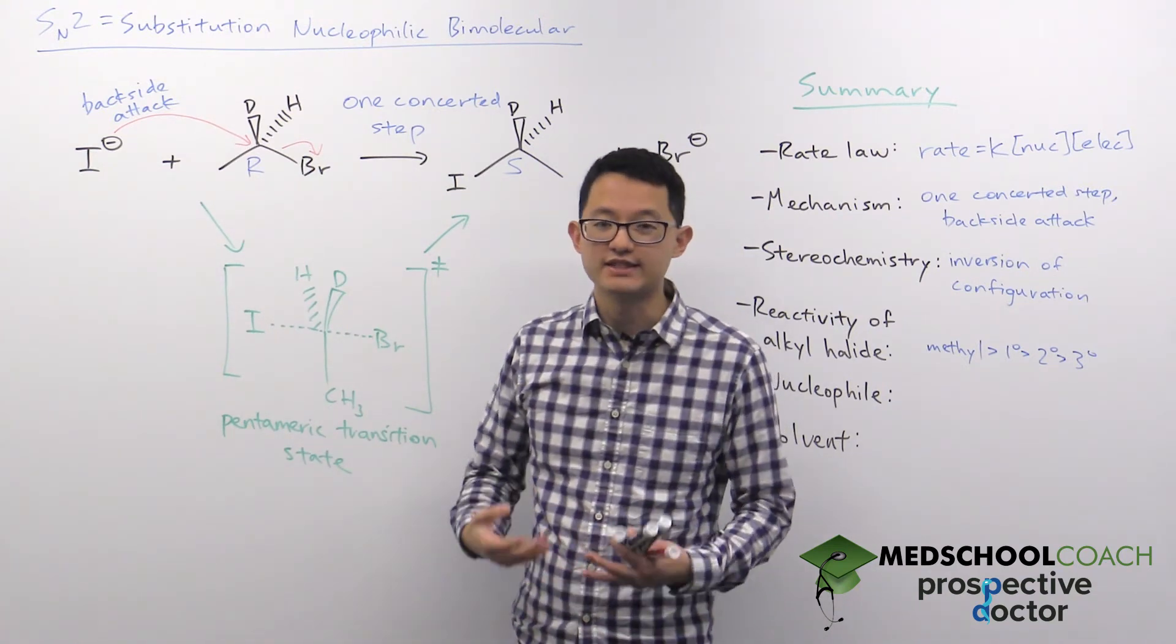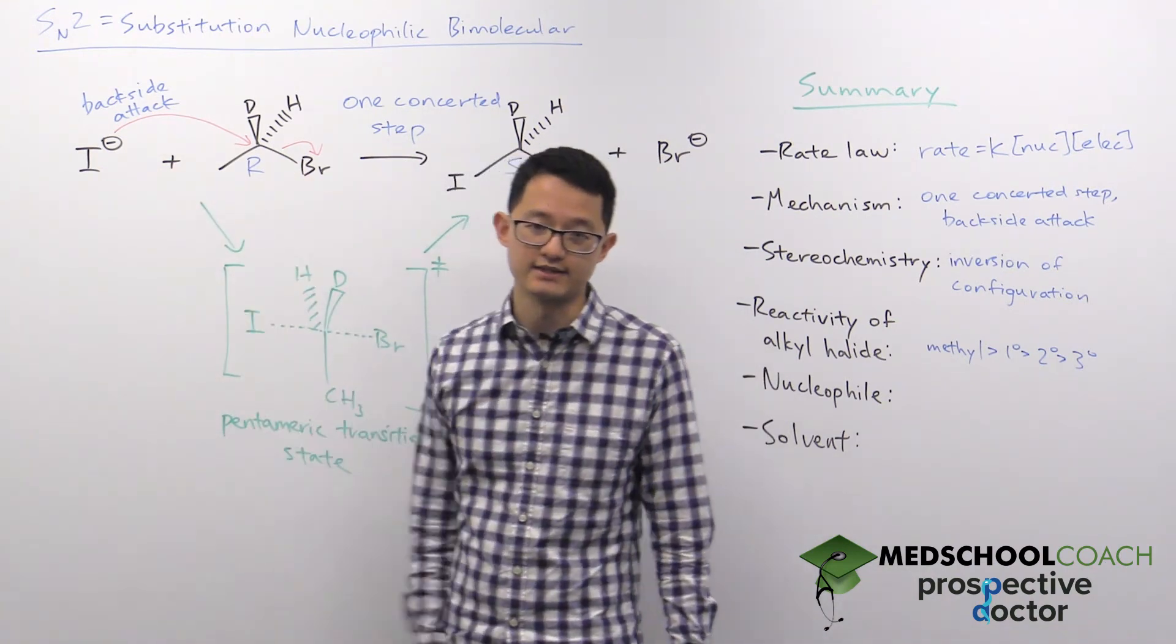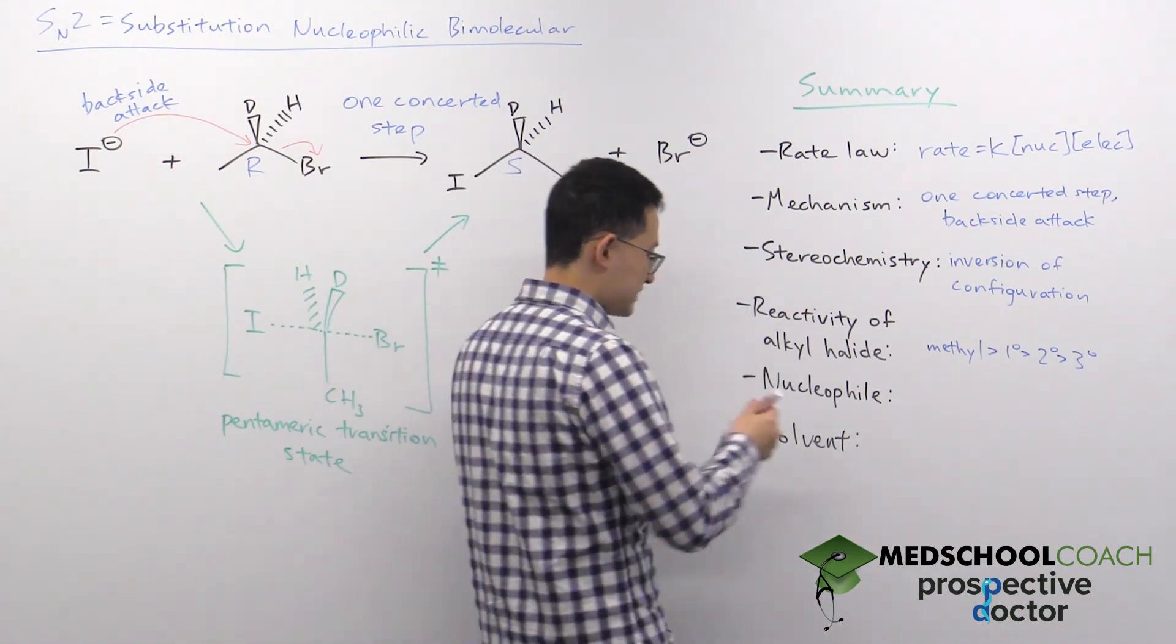And if you have one methyl group, it's not too bad. But if you have three other methyl groups coming off that carbon that you need to attack, then you have a lot of steric hindrance. It's very tough for a nucleophile to get in there to make its attack.